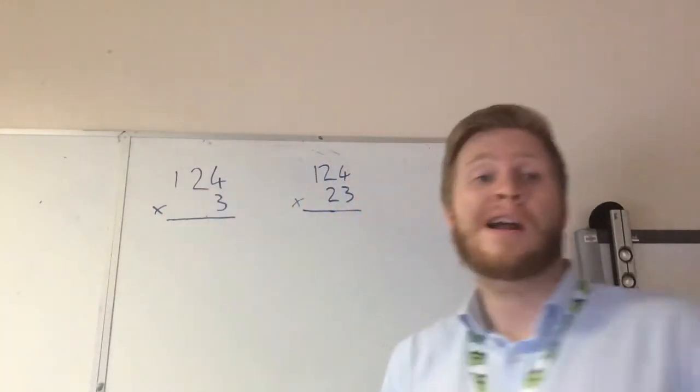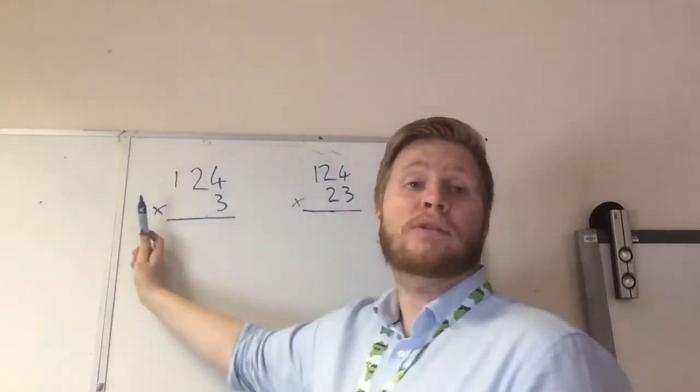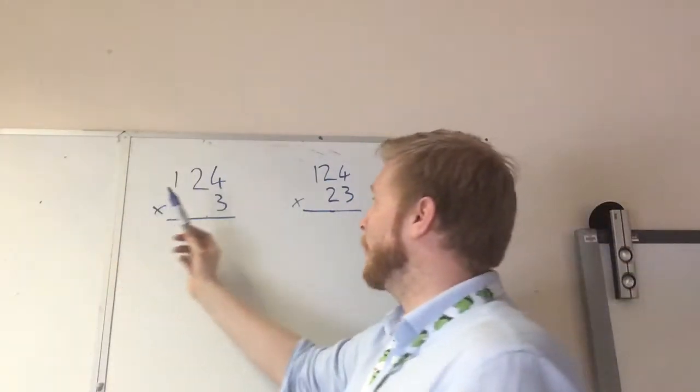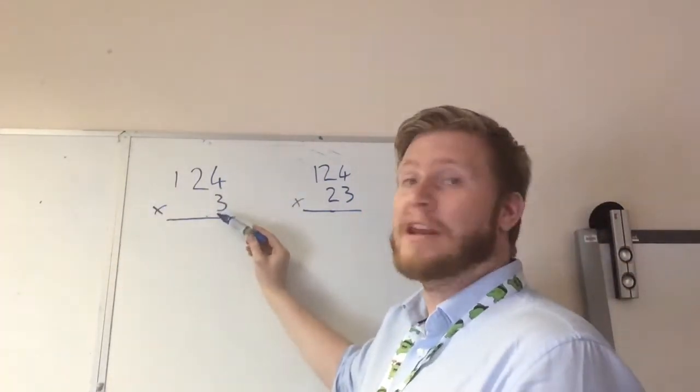So we've got 124, and we're going to times it by 3. So what we do is we work from the right along to this way, the same as we do with all our sums. So what we do first, rather than doing the whole number times 3, is we break it down.